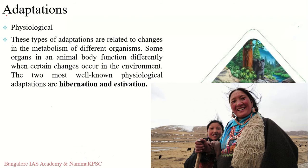The first type is physiological adaptations, which refers to body processes that help an organism to survive or reproduce. Take Tibetans for example — they thrive at high altitudes where the oxygen level is 40 percent lower than at sea level. Breathing such thin air would make most of us sick, but Tibetans' bodies have evolved through genetic mutations that allow them to use oxygen far more efficiently without the need for extra hemoglobin.